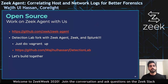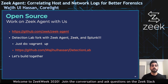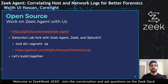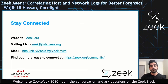To conclude, Zeek Agent is still in the initial stages of development, so come work with us to design the next-generation endpoint monitoring tool. We have a Detection Lab fork that automatically creates a three-node cluster with Zeek Agent, Zeek, and Splunk installed. You just need to clone that fork and run Vagrant up to play with Zeek Agent and send some queries using the Splunk interface. If you have any questions, feedback, or concerns, let us know in the Slack channel for this talk. Thank you so much.